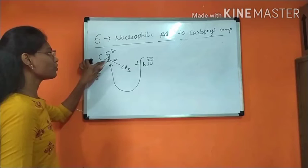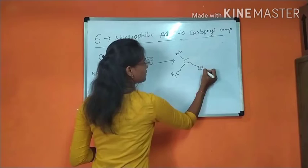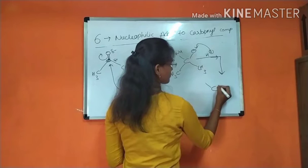Now this nucleophile attacks towards the electron deficient center, that is carbon, resulting in the formation of a new sigma bond between the carbon and nucleophile. Here, the oxygen gets a negative charge. To stabilize it, protonation takes place, and after protonation the final product is formed.